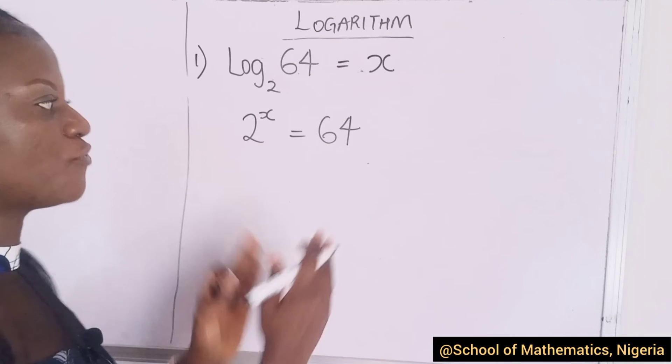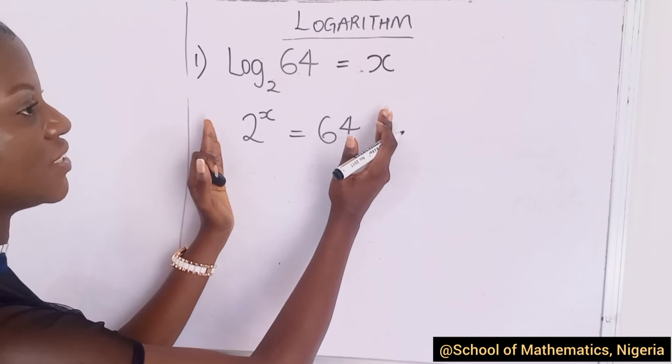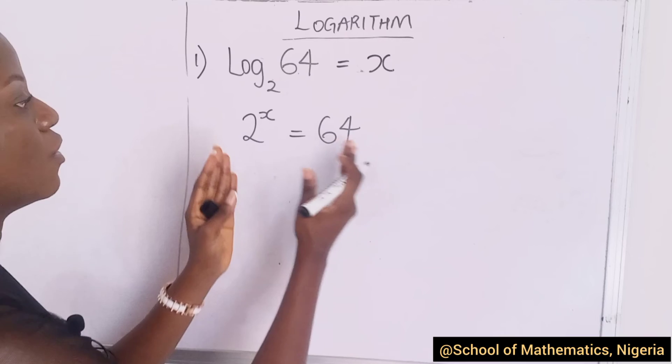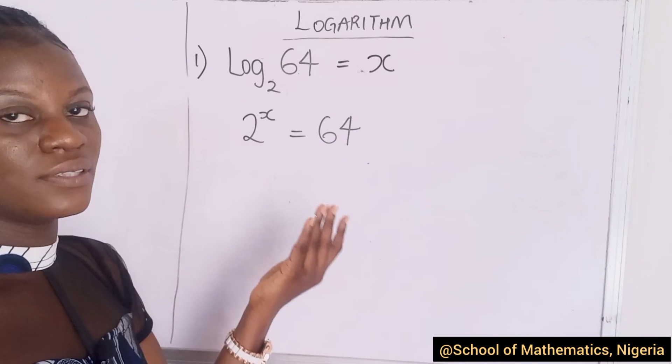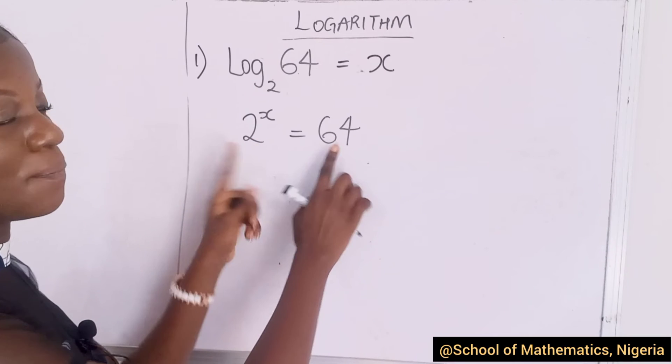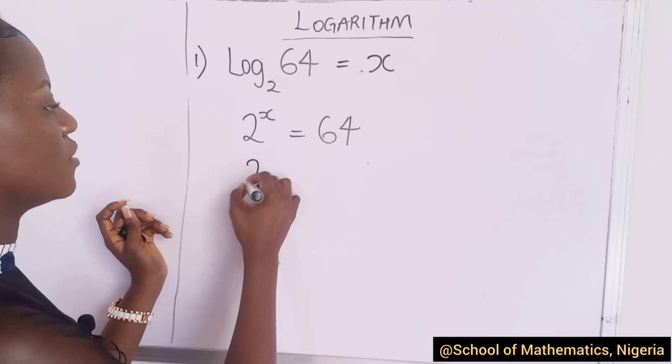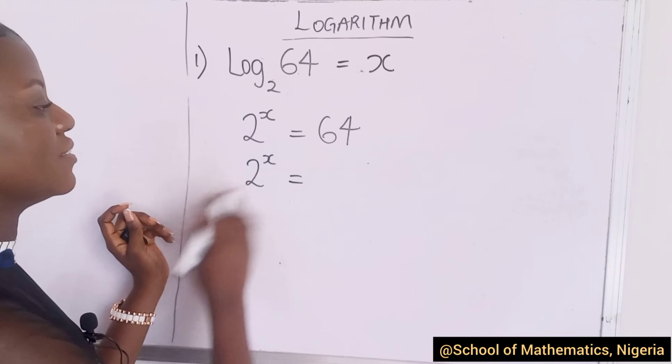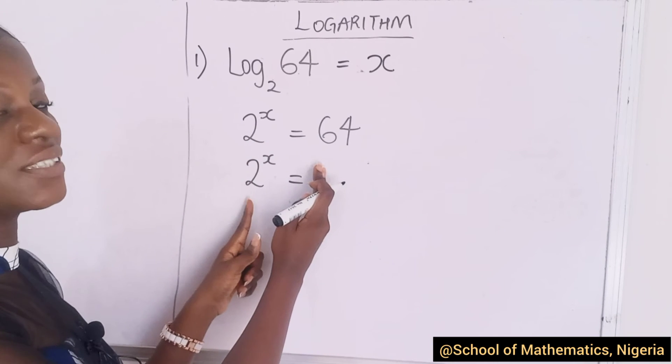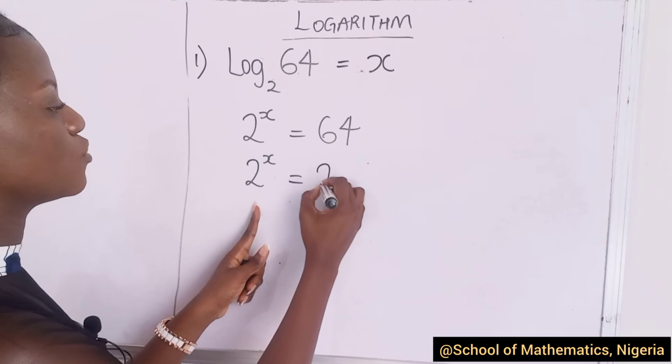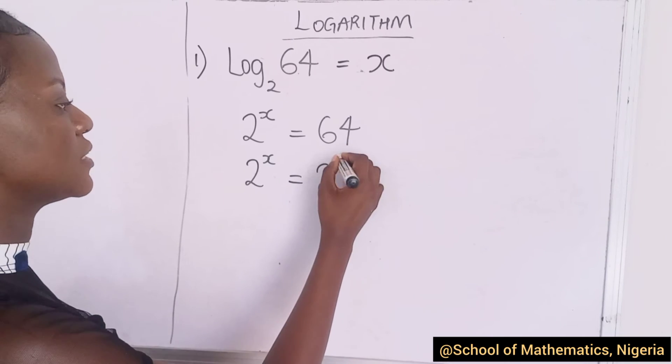So, we already know from indices that this base has to raise to this power for us to get 64. Do you see this? Now, if you remember our rules of indices, it says that whenever you want to solve anything that has an exponent, a power or index, you make sure that they all appear in same bases. So, here you have 2 as your base. You want a base that's same as this. And we know we can write 2 raised to the power of 6.